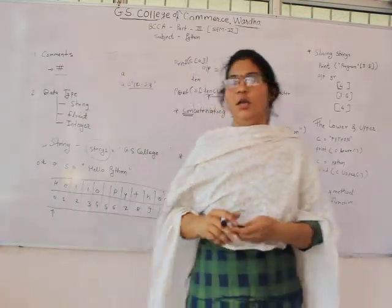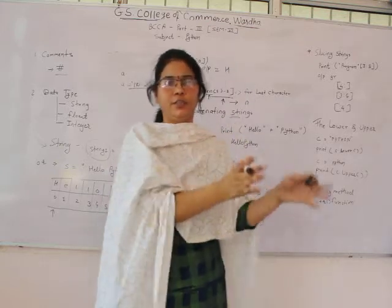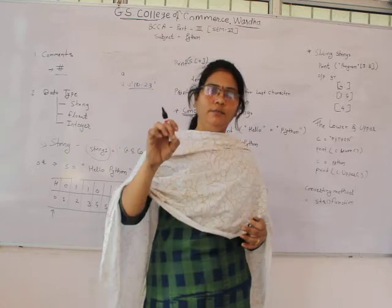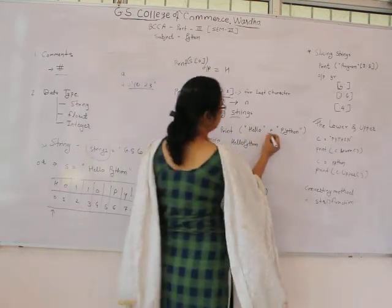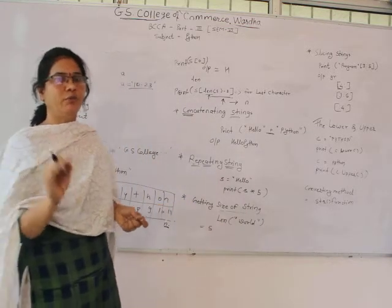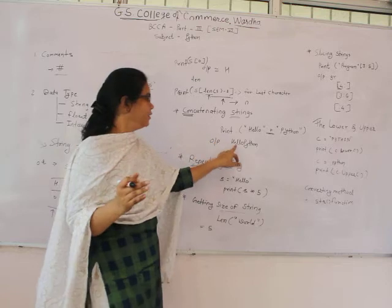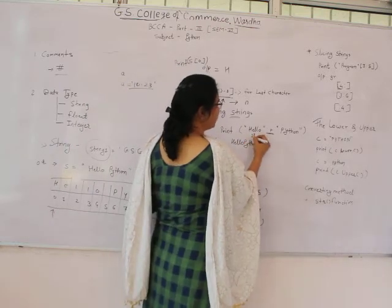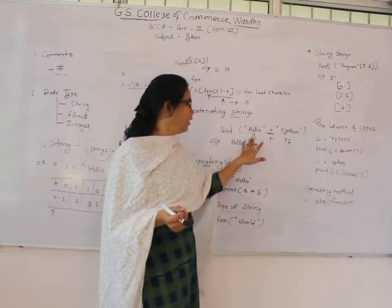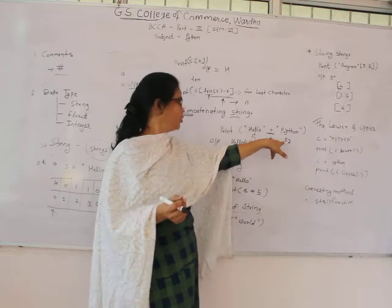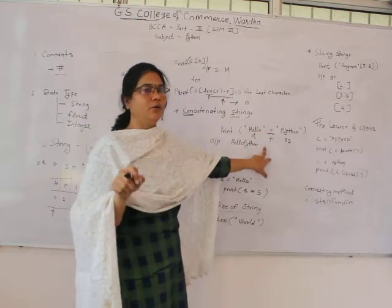For concatenating strings, in C we use strcat functions, but in Python we simply use the plus sign. The plus sign is responsible for concatenating two strings. For example, S1 and S2 concatenated using the plus sign gives the output 'hello python'. We can use variables or directly use string values here. Concatenation in Python is performed using the plus sign.